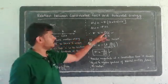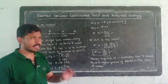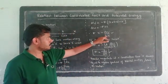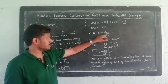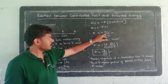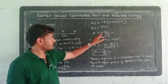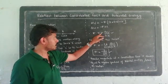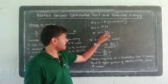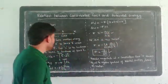F is equal to minus delta U by delta x. This delta by delta x is the gradient. Gradient in one-dimensional motion. So we consider the force is equal to the negative gradient of potential energy.